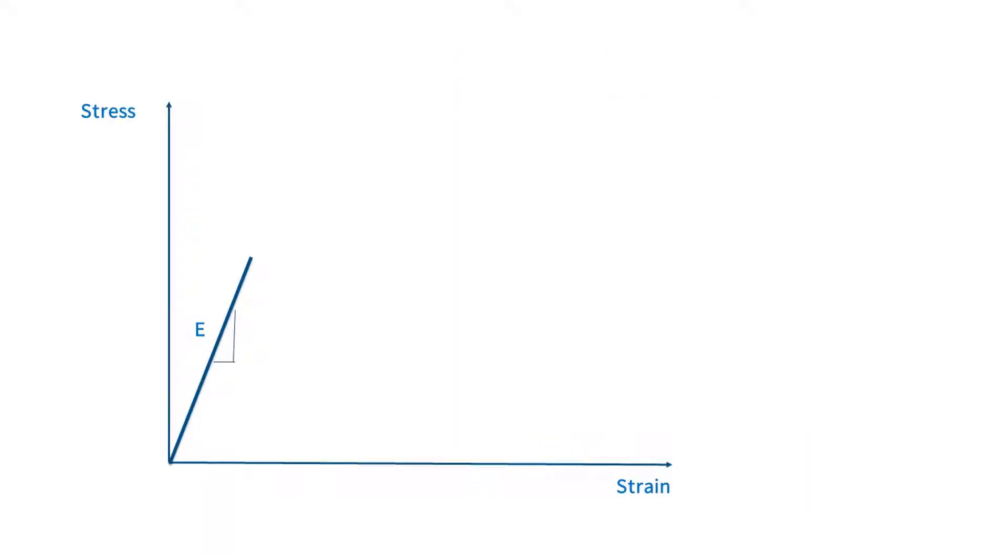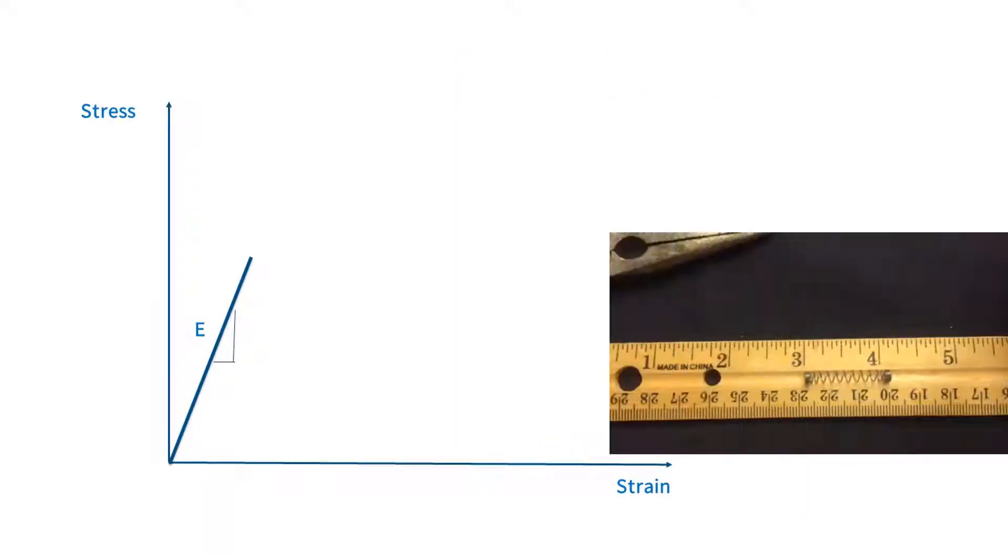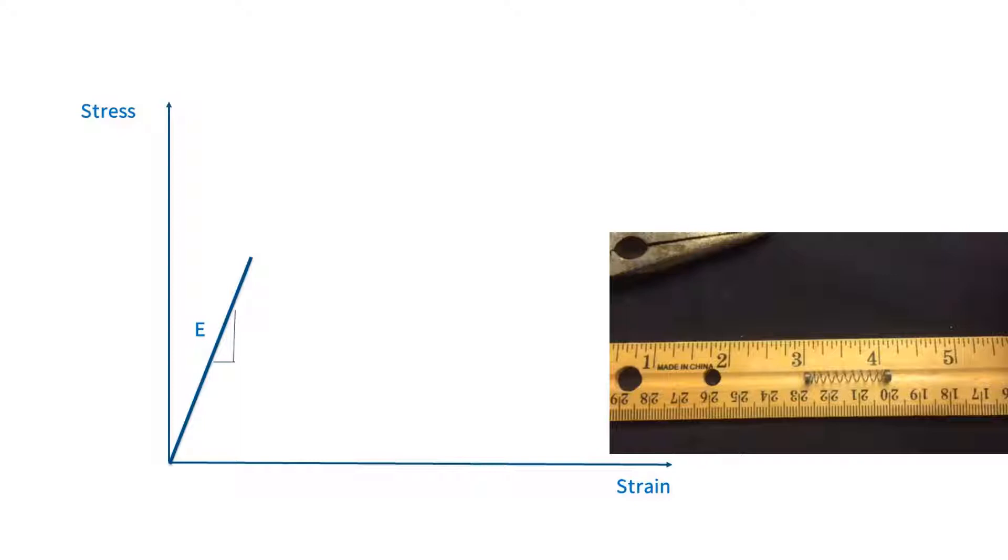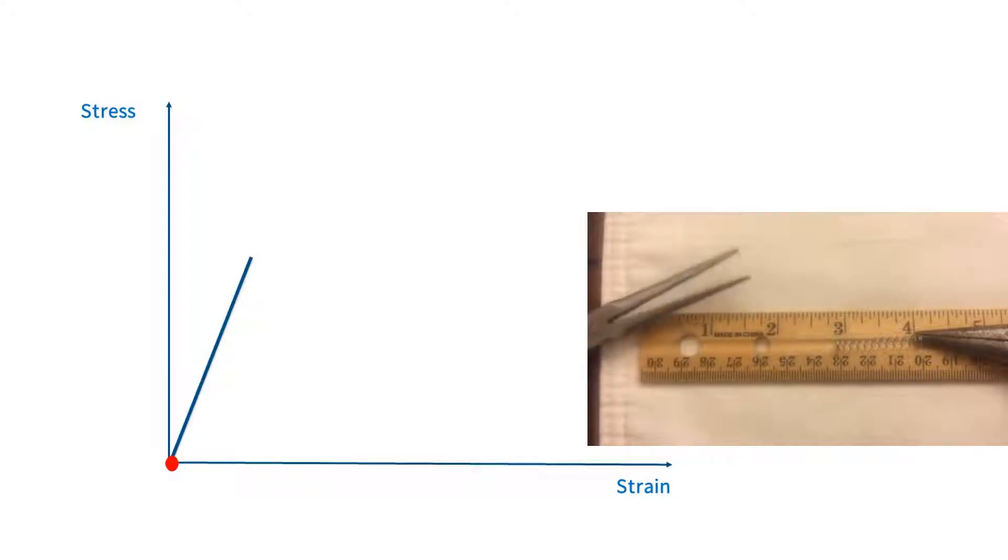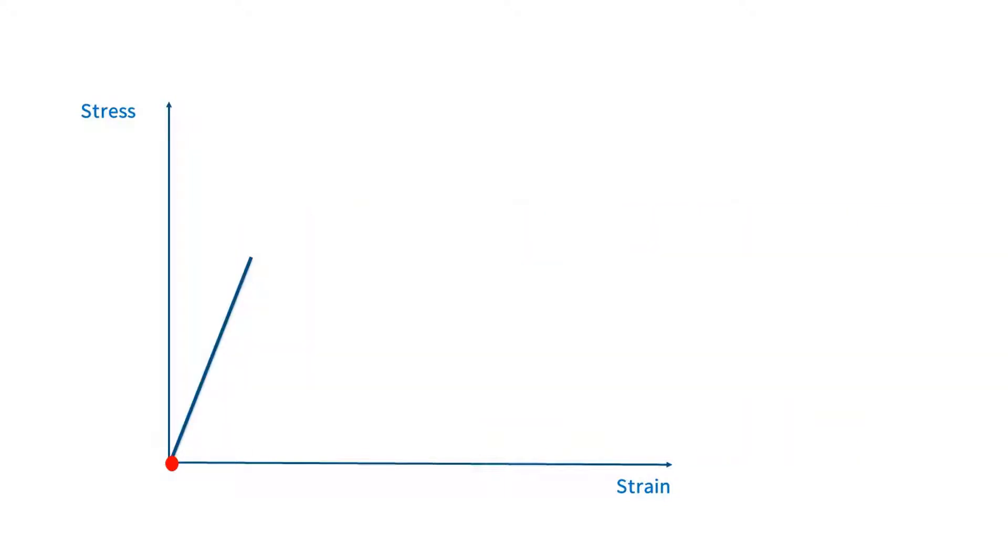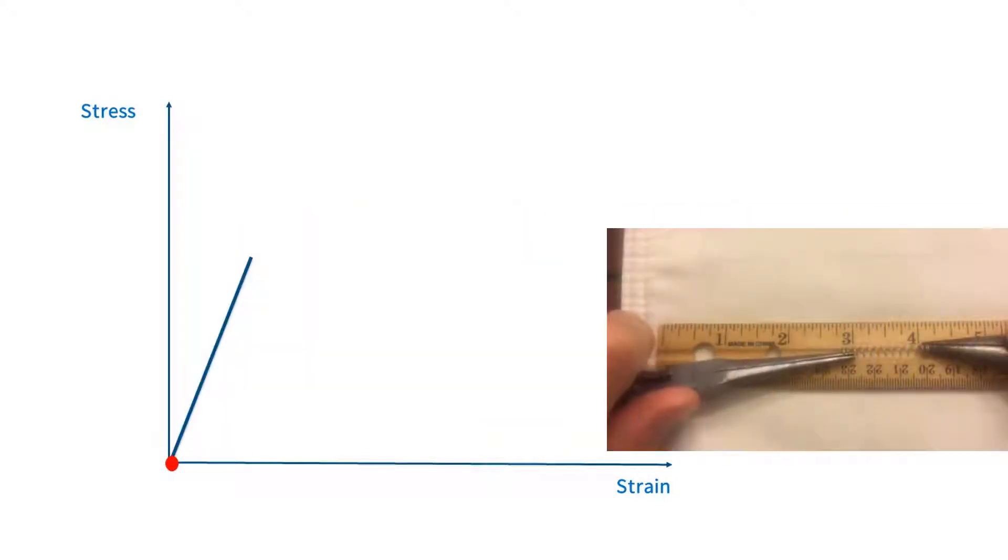Let's start with the plot of stress and strain in the spring from a ballpoint pen. If we pull on the spring and then release it, we will move up and down the same straight line. After we completely release the load, the stress and strain both return to zero and the spring returns to its original length. Let's see what happens if, instead of unloading the spring, we continue to pull on it.